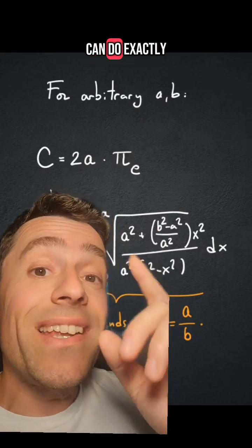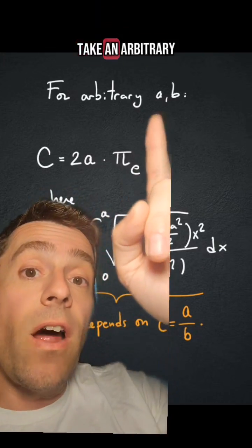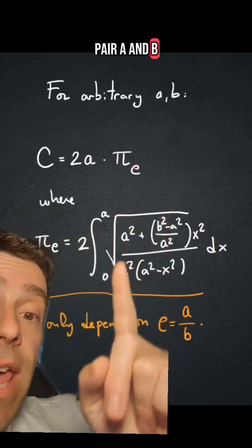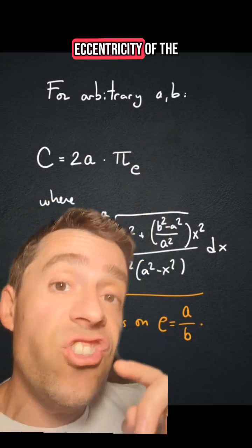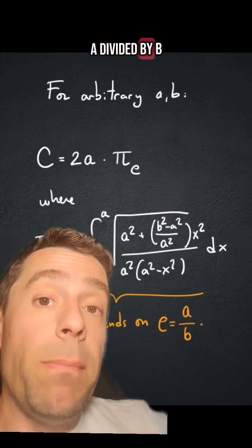And then we can do exactly the same thing for any ellipse. Take an arbitrary pair, a and b, and define the eccentricity of the ellipse to be a divided by b.